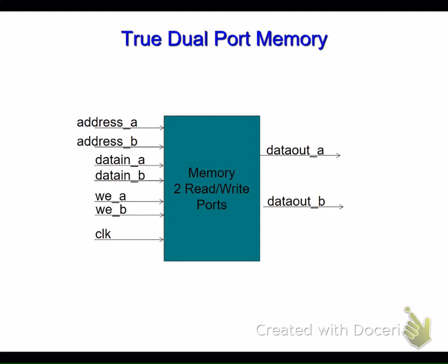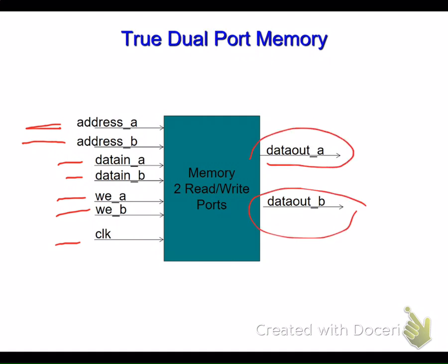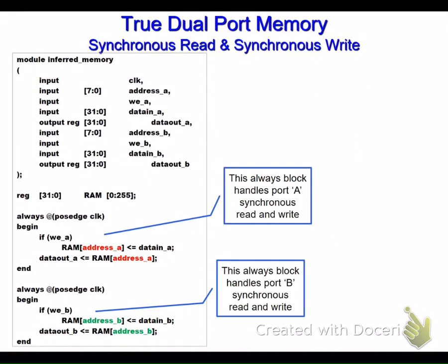We will look at dual-port memory. Assuming we have address A and address B, data input A and data input B, write enable A, write enable B, and a clock, we will also have data output A and data output B.